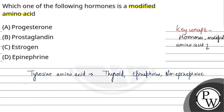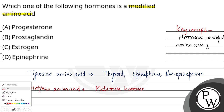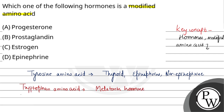If we talk about tryptophan amino acids, the derivative hormone from tryptophan is melatonin hormone, which is secreted from the pineal gland.